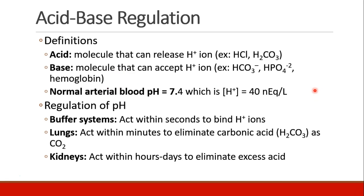The normal arterial blood pH is 7.4, which corresponds to a hydrogen ion concentration of 40 nanoequivalents per liter. Your body has a lot of different ways to regulate pH precisely. There are buffer systems that act within seconds to bind up hydrogen ions. Your lungs can act within minutes to eliminate carbonic acid as CO2, and your kidneys can act within hours to days to eliminate excess acid as well.